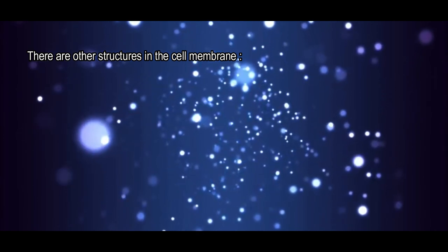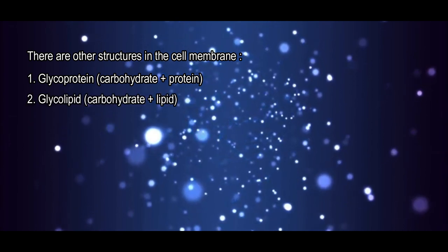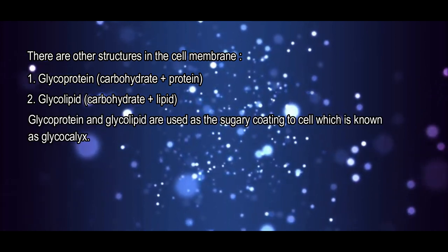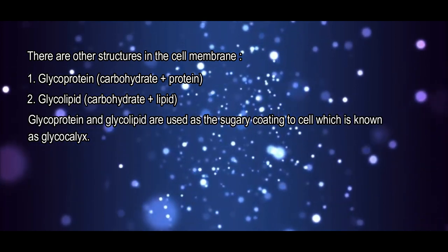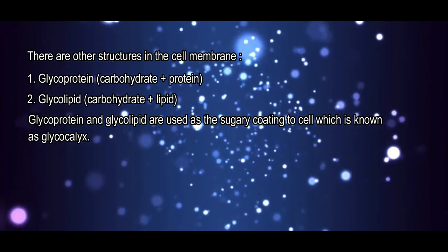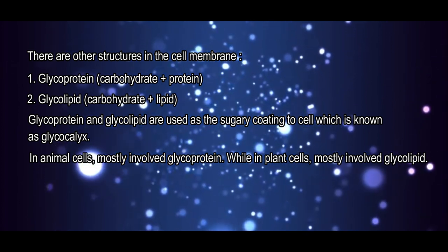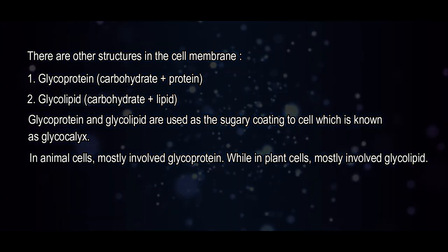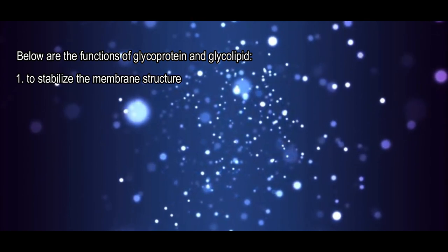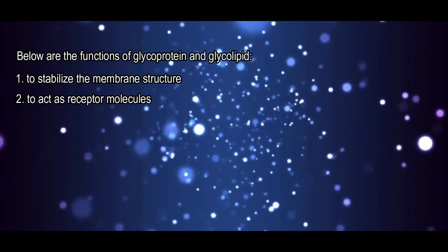There are other structures in the cell membrane: glycoproteins, the combination of carbohydrates and proteins; and glycolipids, the combination of carbohydrates and lipids. Glycoproteins and glycolipids are used as a sugar coating to the cell, which is known as the glycocalyx. In animal cells, this mostly involves glycoproteins, while in plant cells it mostly involves glycolipids. The functions of glycoproteins and glycolipids are: first, to stabilize the membrane structure; second, to act as receptor molecules; and third, to act as cell markers or antigens.